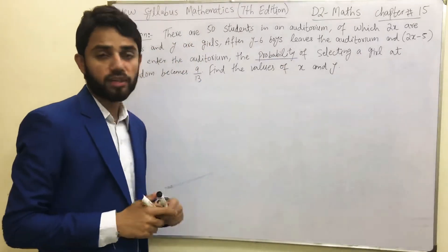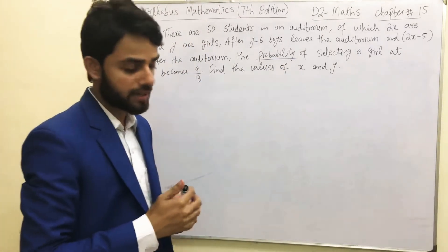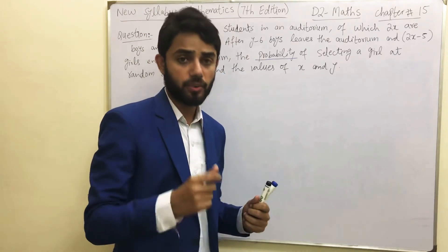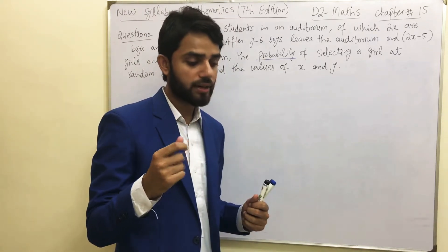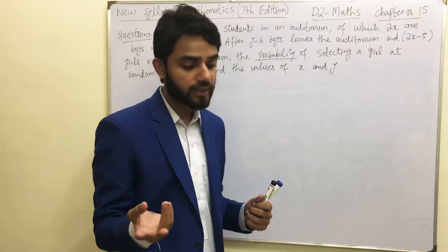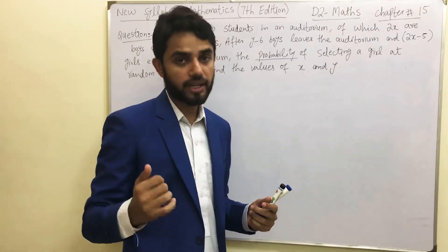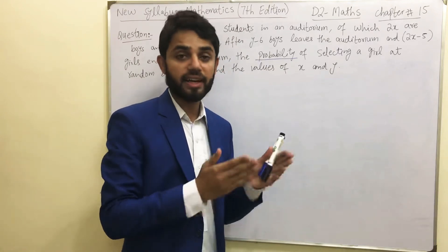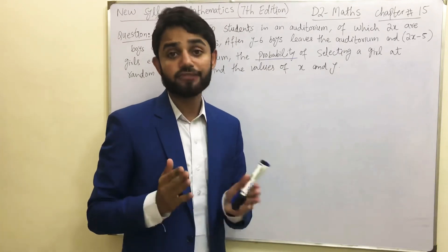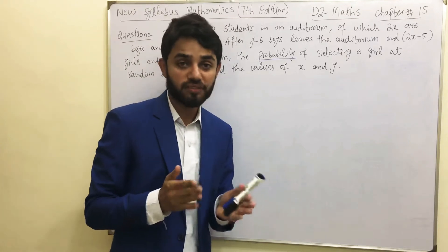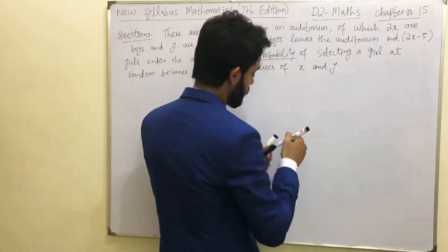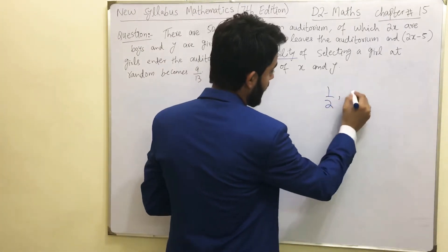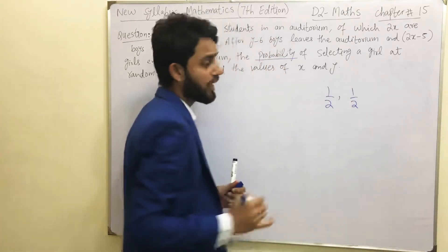First we need to understand what probability means. Let's take a quick example. Suppose you are tossing a coin — there are only two possibilities: you get either head or tail. The probability of getting head or tail is 50-50, which means the probability is 1/2 — one over two for head and one over two for tail.